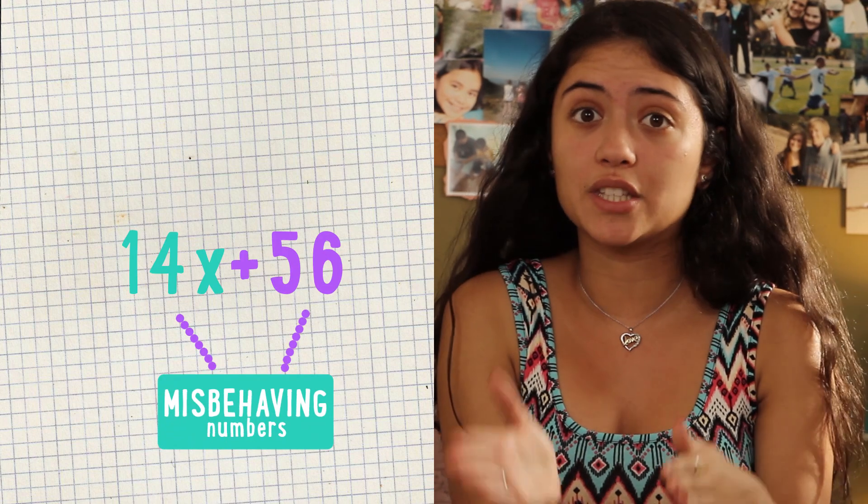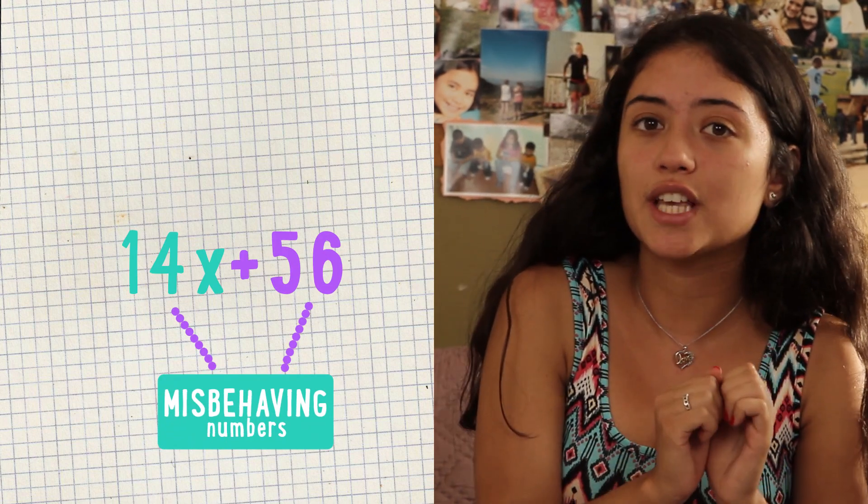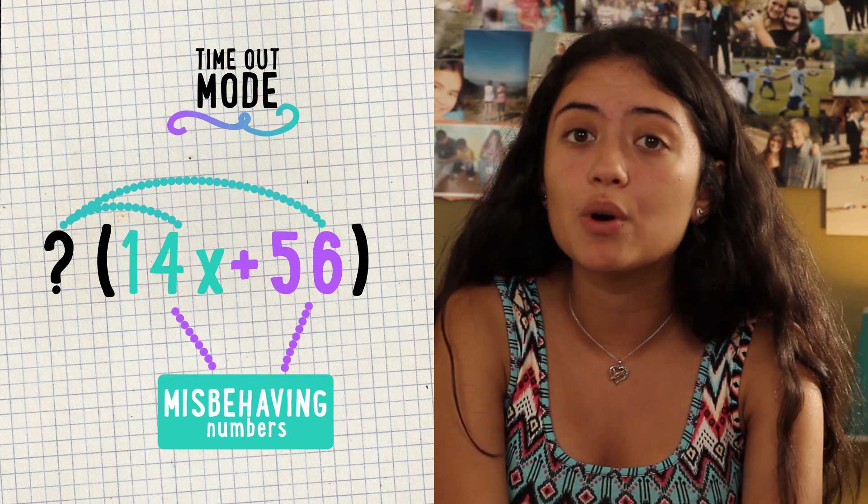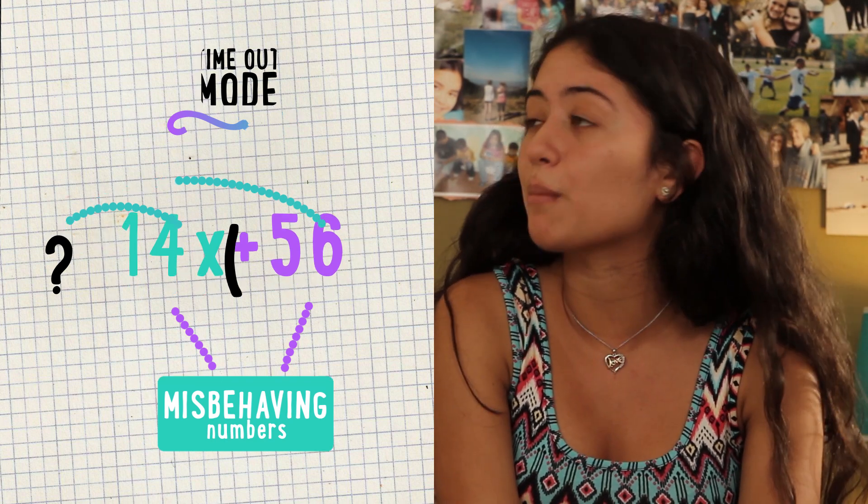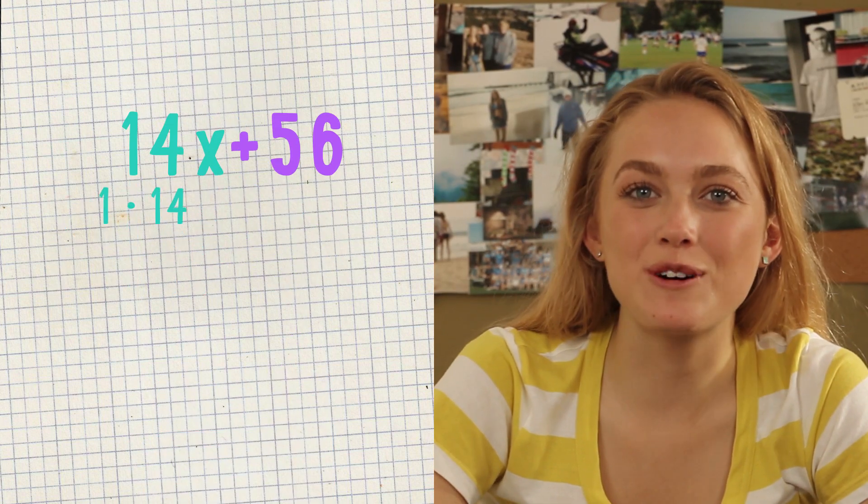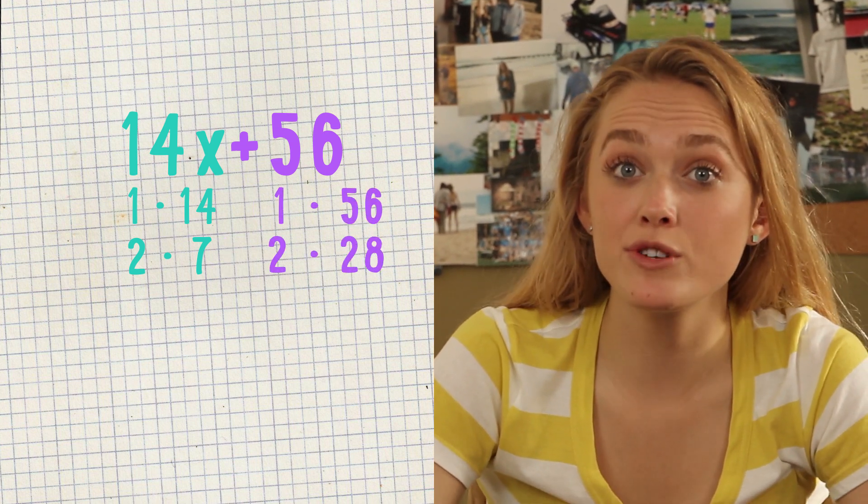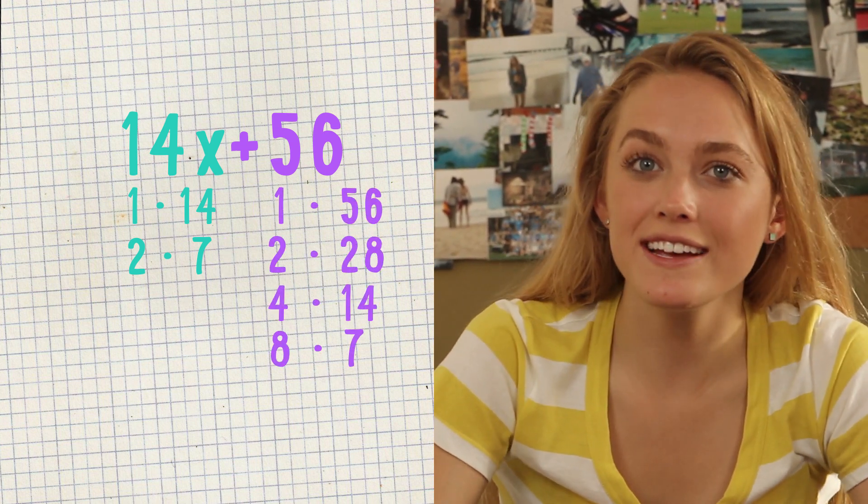Say we have 14x plus 56 and both numbers are totally misbehaving. We want to use the distributive property in reverse to put both numbers in timeout mode. The first thing you could do is look for a common factor of both numbers. With 14 we have 1 and 14, and 2 and 7. With 56 we have 1 and 56, 2 and 28, 4 and 14, and 8 and 7.